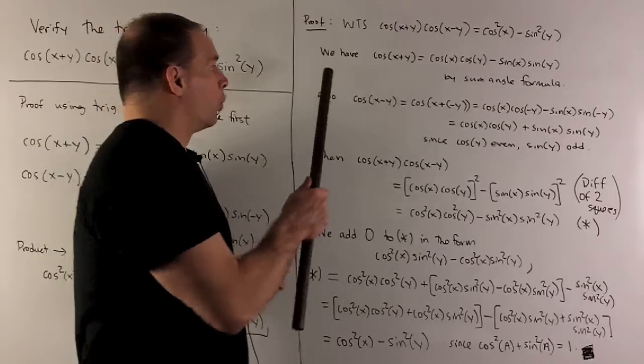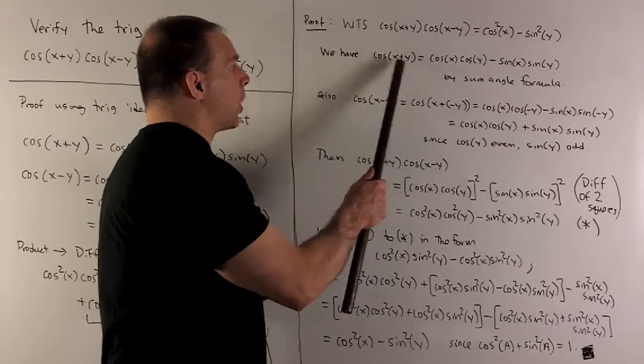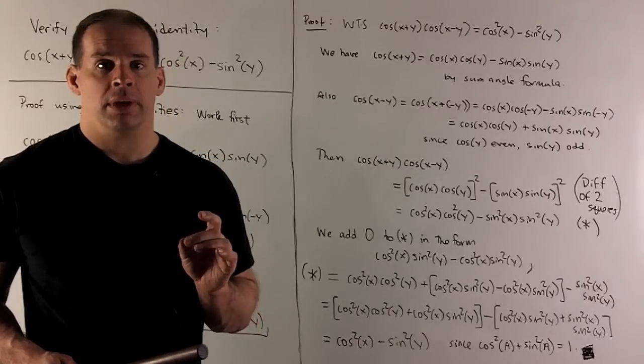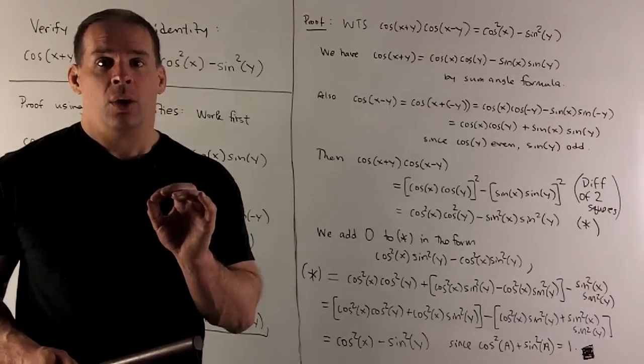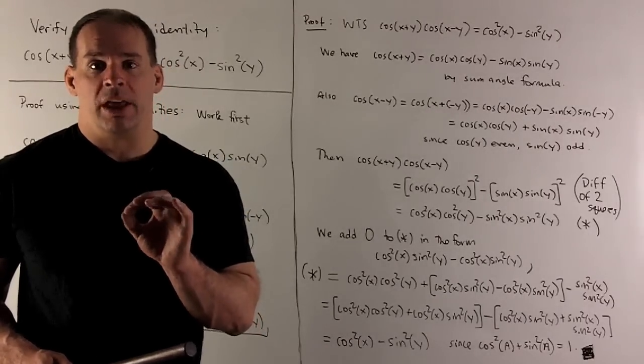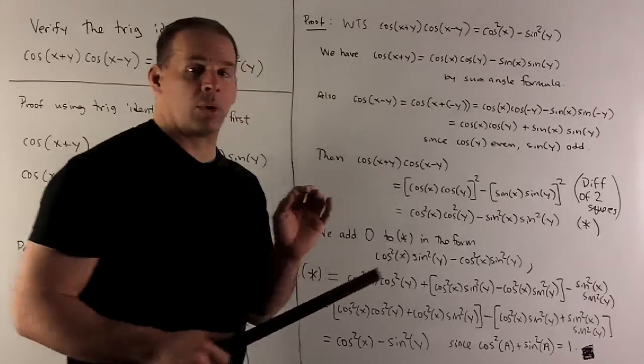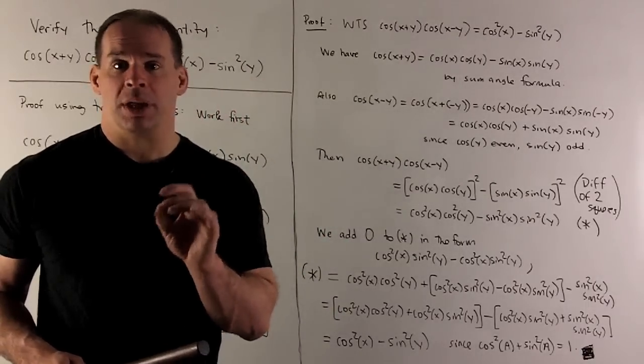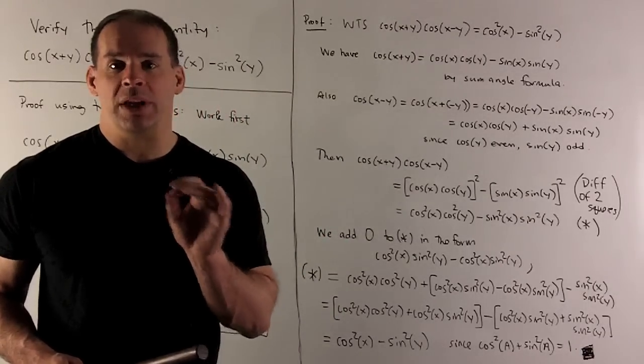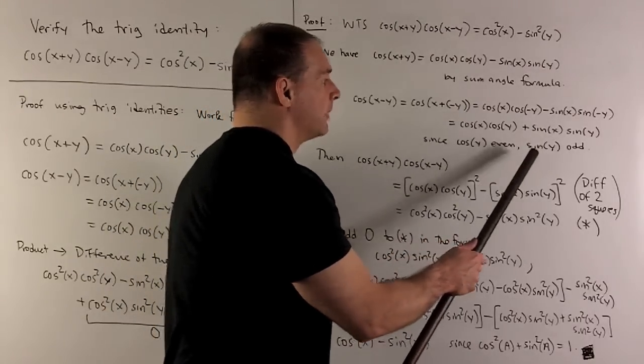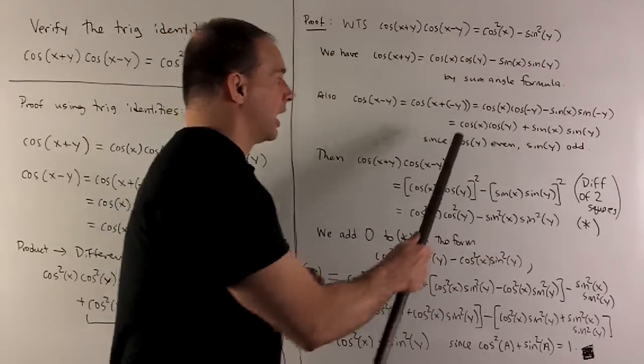Next line, we pull down our cosine x plus y and invoke the sum angle formula. Okay, then we're going to bring out the sum angle formula and apply it to cosine of x minus y. Here, we're going to apply it to x plus minus y. And then, we can get rid of the signs by invoking cosine of y being even, sine of y being odd. So, that gets us to here.